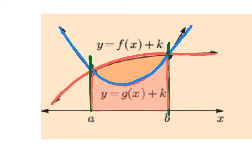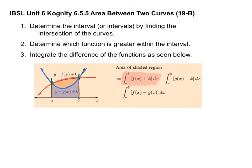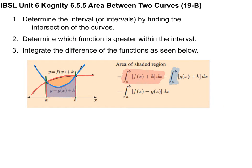We don't want that stuff on the bottom. That is why we then subtract the integral from a to b of g(x), because the integral from a to b of g(x) is this extra stuff down here that we don't want. So by subtracting that integral, we are getting rid of the part of the area that's extra that we don't need, and that leaves us with just the area that we're looking for — which is between the two curves.